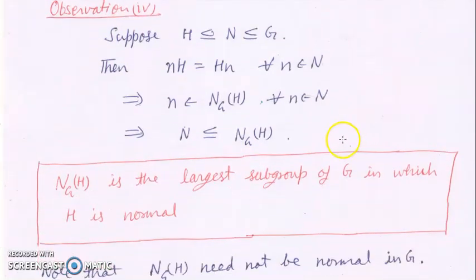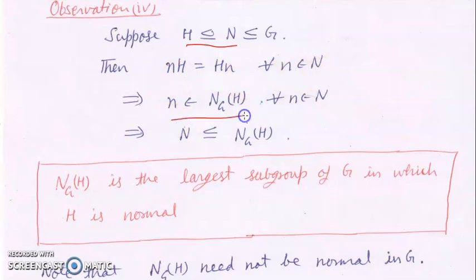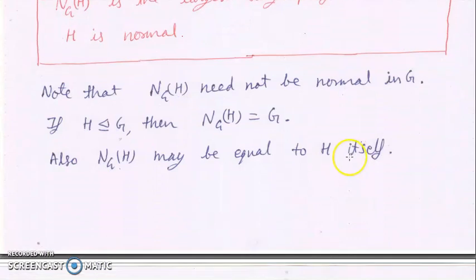Suppose N is any subgroup of G such that H is normal in N. Then by definition of normality, nH = Hn for all n in N, which means every n belongs to the normalizer of H. So N is contained in the normalizer of H. Therefore, the normalizer of H is the largest subgroup of G in which H is normal. Note that the normalizer of H need not itself be a normal subgroup of G.